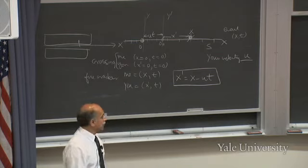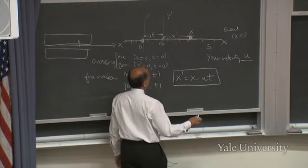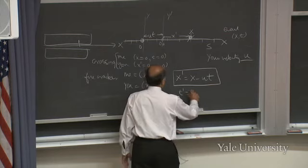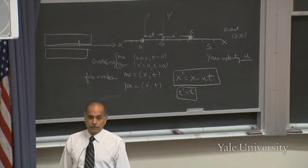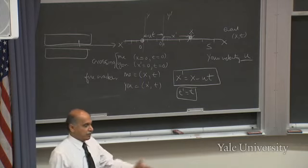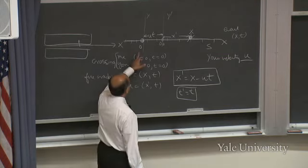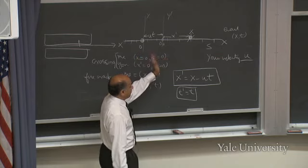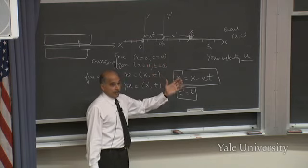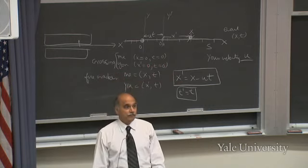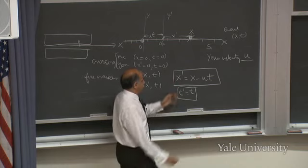Formally, you can define a time t-prime for the prime observer, but it goes without saying that t-prime and t are the same. There is no notion of 'my time' versus 'your time' — there is universal time in Newtonian mechanics. If we agreed we met at t=0 and an explosion took place five seconds after our meeting, it's going to be five seconds for me and five seconds for you. The time difference between two events is the same for all people. This is called a Galilean transformation.